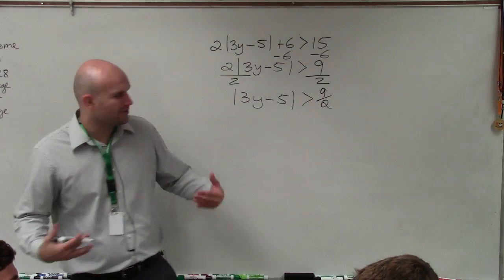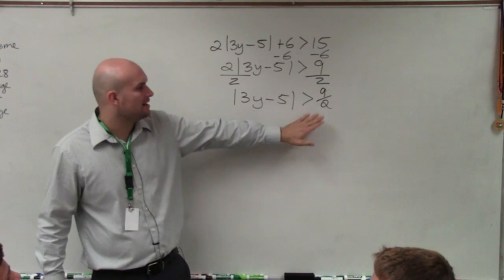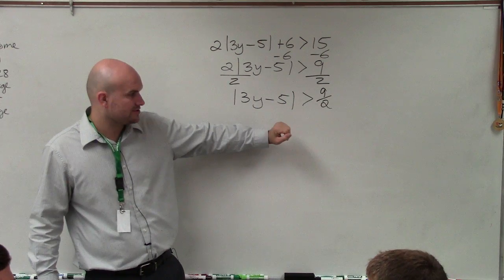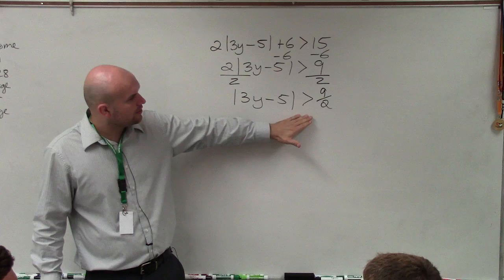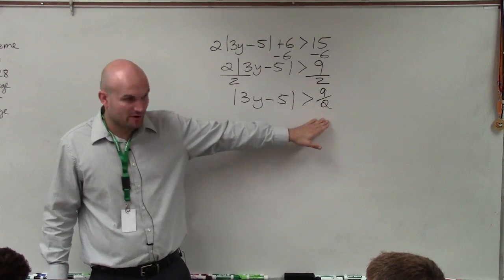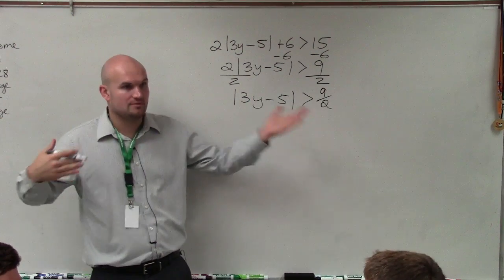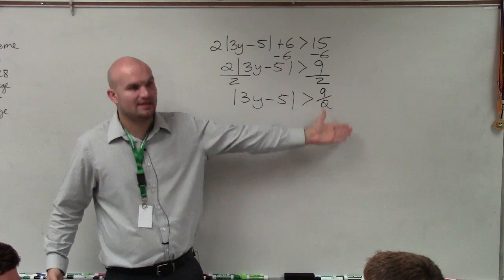So I'll leave this as a fraction. So now, and the main important thing, guys, don't be so worried about, I know you could convert that to 4.5, but I'm going to leave it as a fraction for the work I'm going to do. So now we have an absolute value greater than 9 over 2. Now for absolute value equations, we set up two cases, right? We did the positive, and then we did the negative.